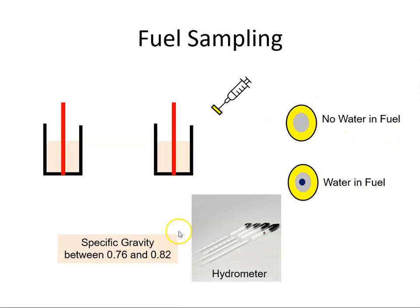Another alternative is to use a hydrometer, which measures the specific gravity of the fuel. For Jet A1, the specific gravity should be between 0.76 and 0.82. As long as the fuel is within those ranges, it would be acceptable.